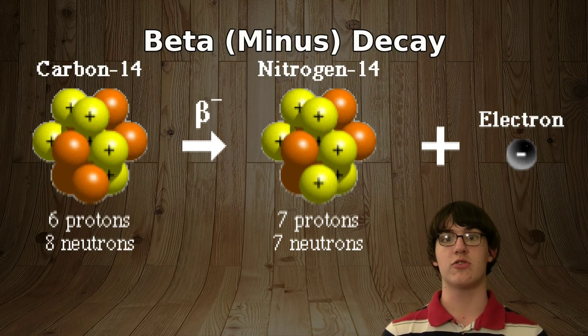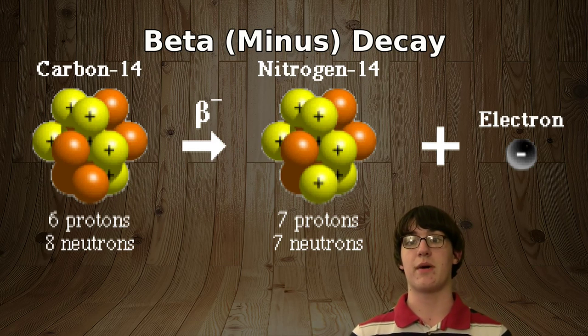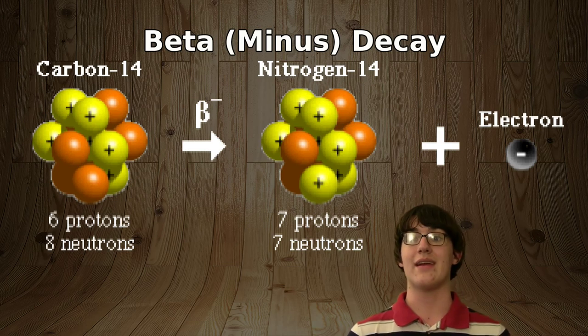This happens when a neutron turns into a proton. This means that its atomic number goes up by one due to the additional proton, but the atomic weight stays the same because there is still the same amount of particles in the nucleus.